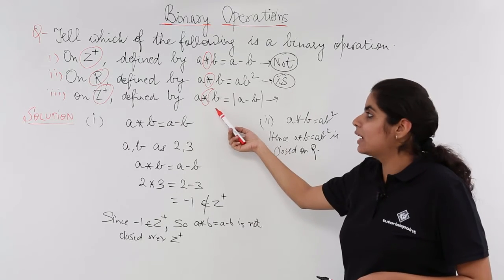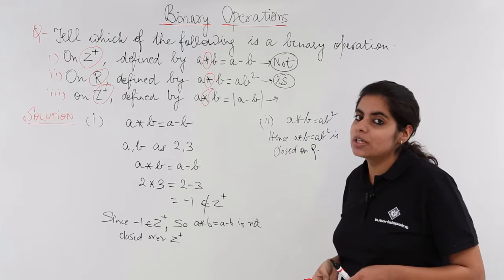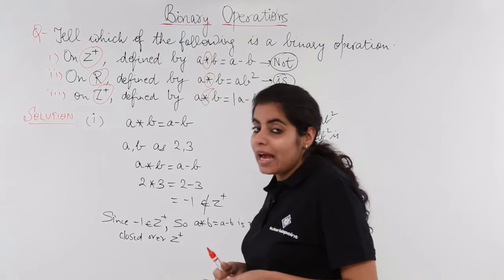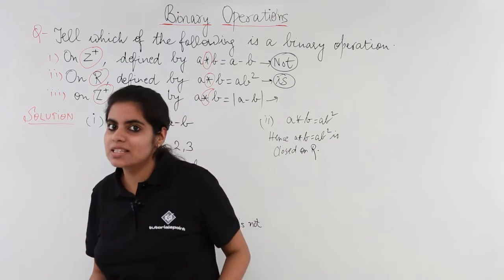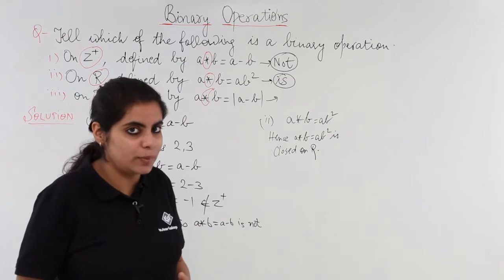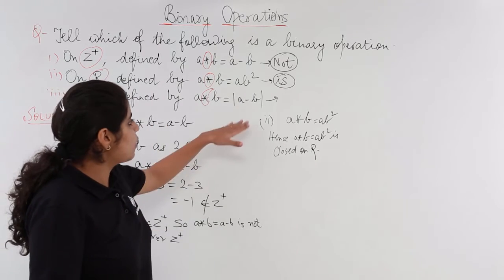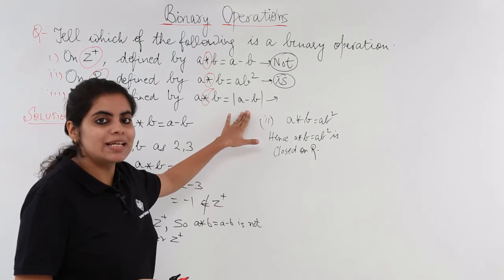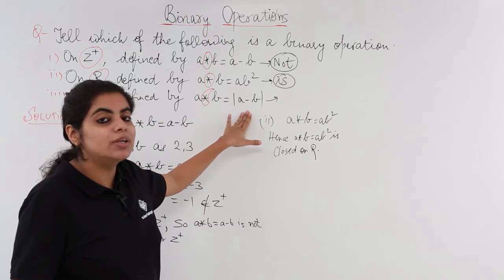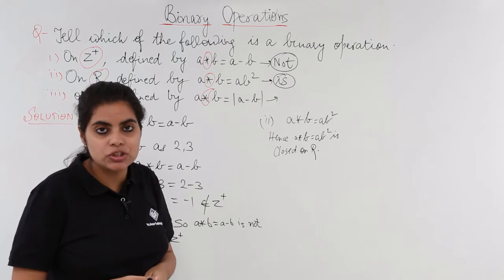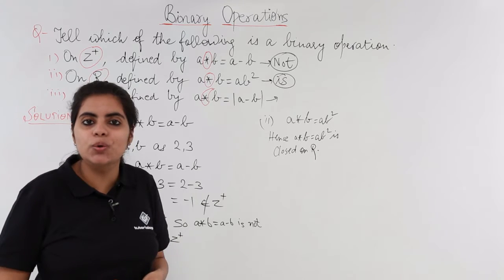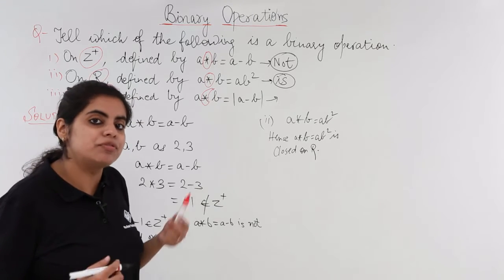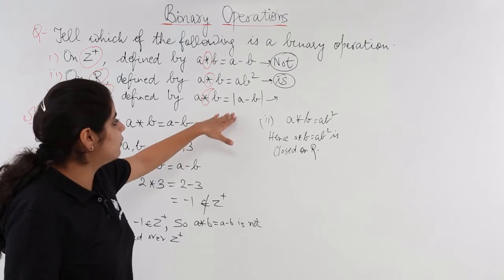The third question is what? On Z positive defined by A star B is equal to modulus of A minus B and then we have to check whether this third part is a binary operation or is not a binary operation. Now most of you must have been familiar about this operation which is modulus operation. For those who do not know what is mod, let me first explain what is mod and then we will see the question.